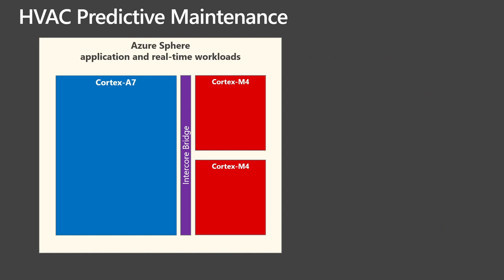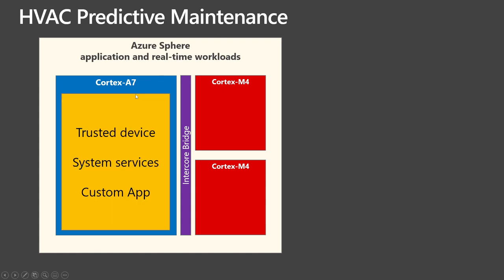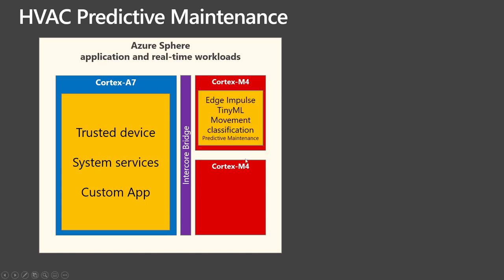This demo focuses on predictive maintenance for HVAC systems. The Azure Sphere is a multi-core microcontroller where you can deploy custom apps onto three cores. There's the Cortex-A7 which runs system services such as security services and over-the-air updates, as well as a custom high-level application. There are also two real-time cores called Cortex-M4s, and on the first core I'm going to be running the Edge Impulse TinyML model for movement classification for predictive maintenance.